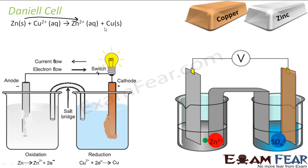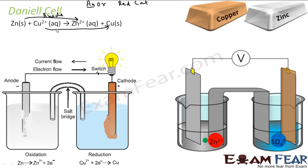We have the anode and cathode to consider. The memory aid is: anode is where oxidation takes place, and reduction takes place at cathode. So the oxidation reaction is zinc to Zn2+, which happens at the anode. Copper2+ to copper is the reduction reaction, which happens at the cathode.